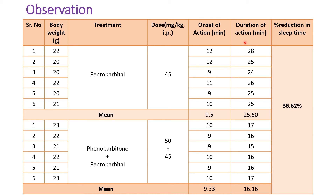However, the duration of action does change. In the pentobarbital-treated group, the duration of action — that is, the pentobarbital-induced sleep — is 28, 25, 24, 26, 25, and 25 minutes, giving a mean of 25.50 minutes. In Group 2, treated with phenobarbital plus pentobarbital, since phenobarbital is an enzyme inducer, it reduces the duration of action of pentobarbital, resulting in a reduction in sleep time: 17, 16, 15, 16, 16, and 17 minutes, giving a mean of 16.16 minutes.